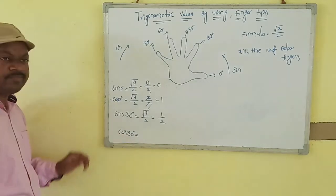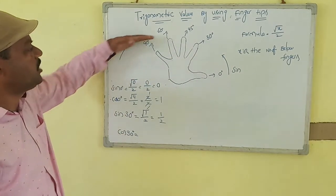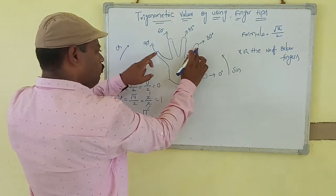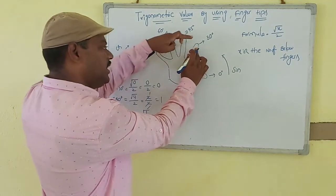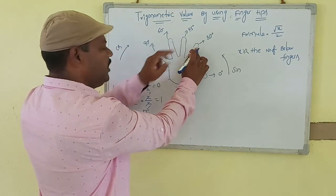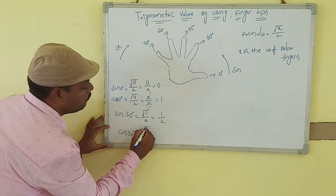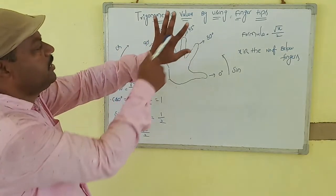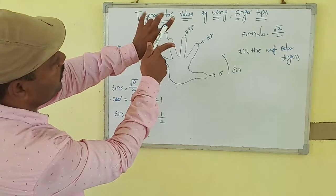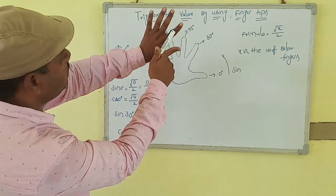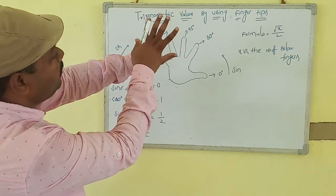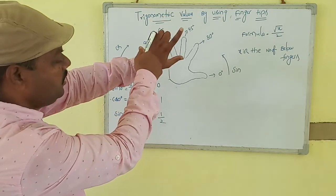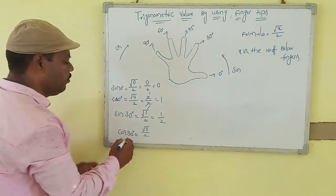Same way, find cos 30 degrees. Moving in the cosine (clockwise) direction from 30 degrees, how many fingers do we cross? One, two, three — three fingers. So cos 30° = √(3)/2.